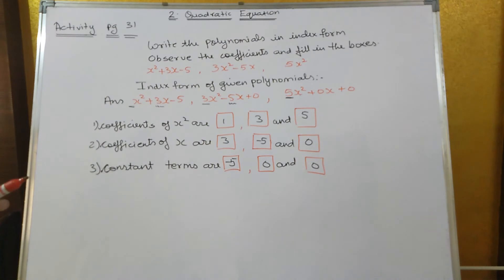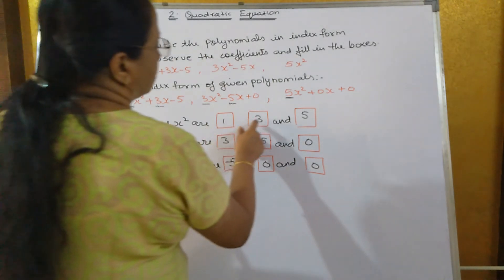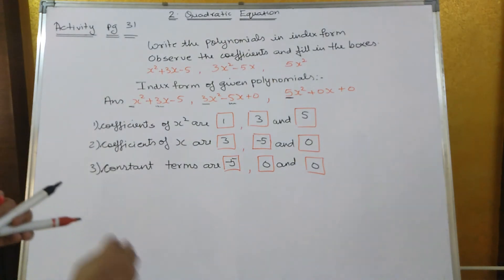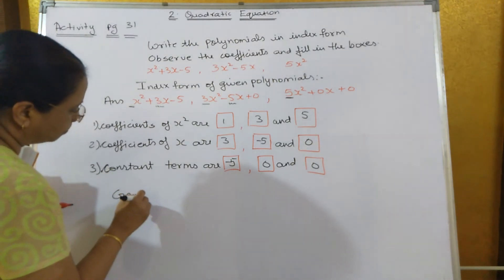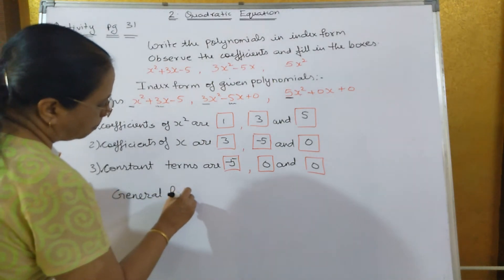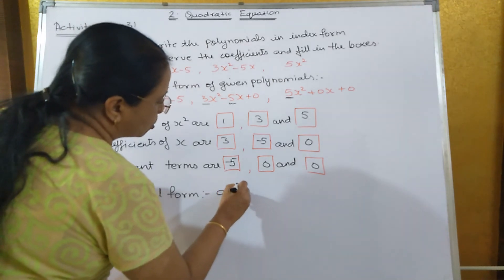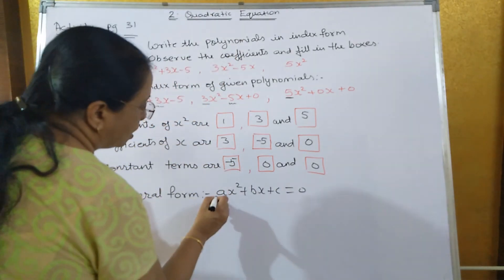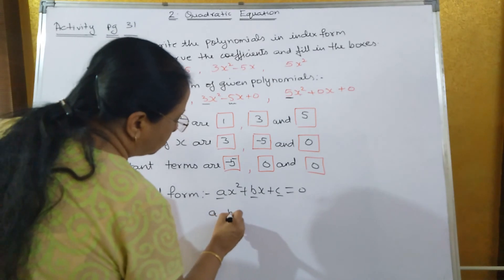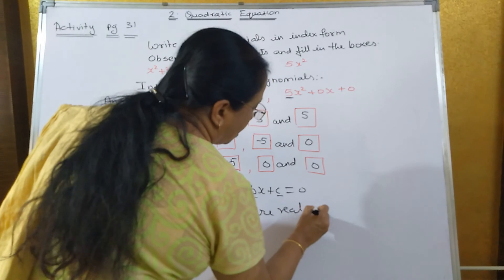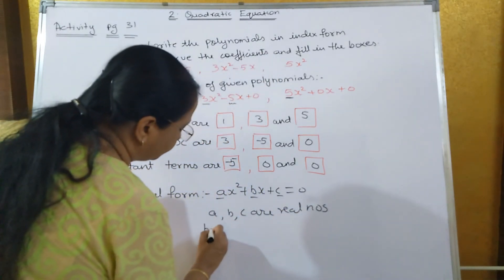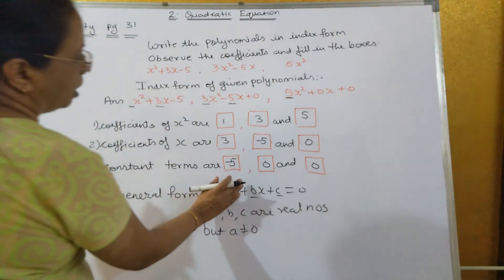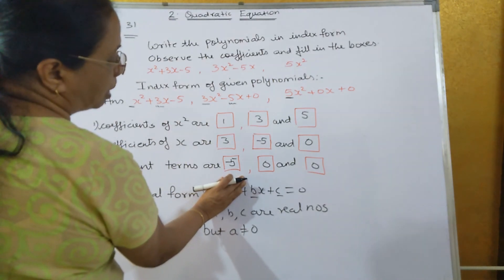None of the numbers are 0 in the first polynomial; the constant term is 0 in the second; and the x-variable term is also 0 in the third. The general form of a quadratic equation is ax² + bx + c = 0, where a, b, and c are real numbers, but a should never be equal to 0 — because if a equals 0, it will no longer be a quadratic equation; it will become a linear equation.